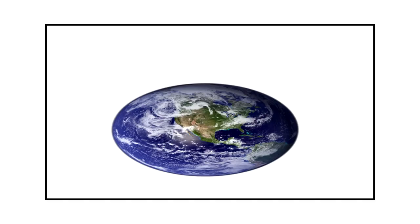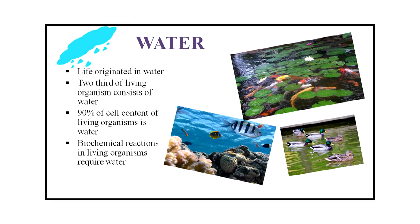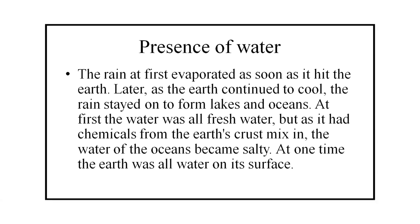Now we will discuss the conditions necessary for sustaining life on Earth. Life originated in water. Two-thirds of living organisms consist of water, and 90 percent of the cell content of living organisms is water. Biochemical reactions in living organisms require water. The first condition necessary to sustain life on Earth is the presence of water. The rain at first evaporated as soon as it hit the Earth, but later as the Earth continued to cool, the rain stayed to form lakes and oceans. At first the water was all fresh water, but as chemicals from the Earth's crust mixed in, the water of the oceans became salty.